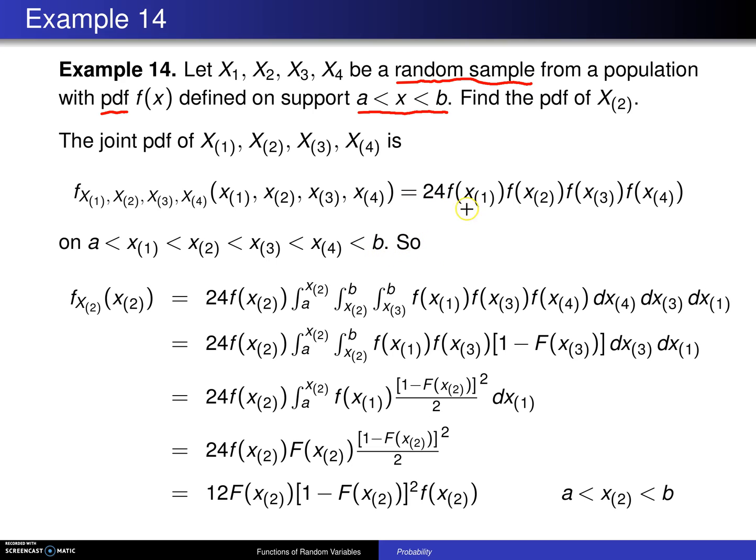So this time, instead of the joint distribution, what we want is the marginal distribution of x2 alone. Well, the way you do that is you integrate out those variables you're not interested in, which are x4, x3, and x1.